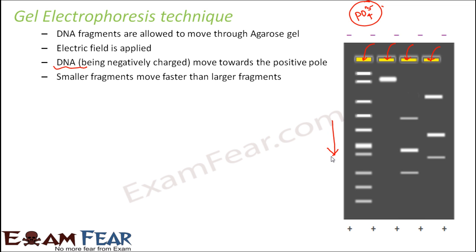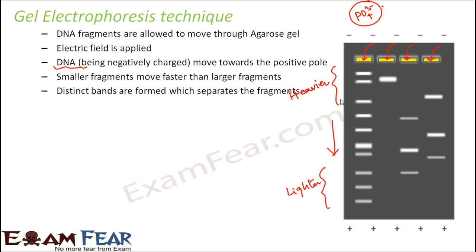Anything which is smaller and lighter will move faster. For example, comparing a very thin man with a very fat man asked to run — obviously the thin one runs faster because his mass is less. Similarly, smaller DNA fragments are lighter and therefore move fast, traveling a larger distance. Comparatively lighter fragments end up on the far side while heavier fragments, which could hardly move, travel a lesser distance. Distinct bands are formed which separate the fragments, allowing you to separate DNA fragments based on their weight.